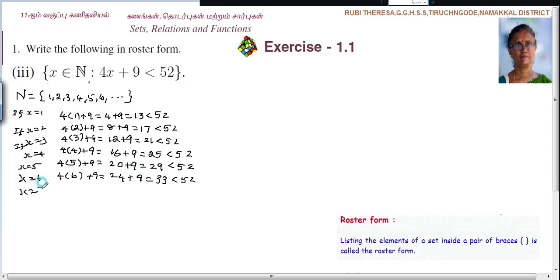X equal to 7. 4 into 7. 4 7's are 28 plus 9, equal to 37, less than 52. X equal to 8. 4 into 8 plus 9. 4 8's are 32 plus 9, that is equal to 41, less than 52.